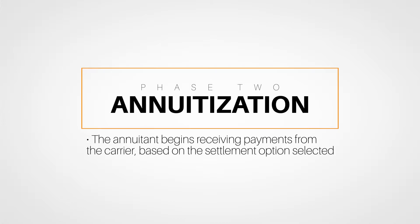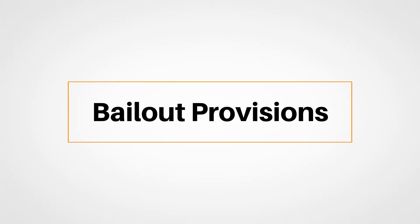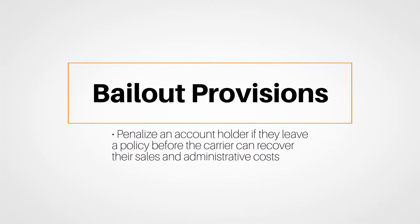Annuities contain definite advantages to the taxpayer. We also looked at the differences between immediate and deferred annuities and tied in the premium paying methods that can be made for them. There are provisions called bailout provisions that penalize an account holder if they leave a policy before the carrier can recover their sales and administrative costs. Bailout penalties are heaviest during the early years of the policy and gradually reduce to zero within six to ten years.